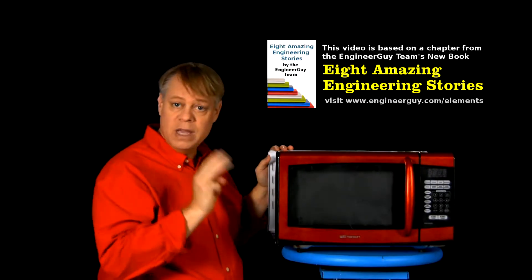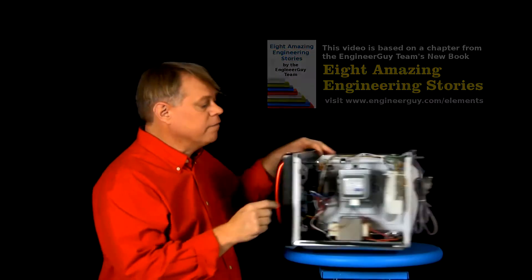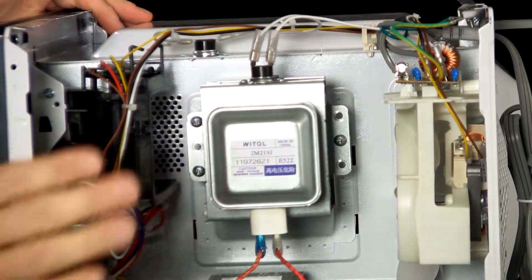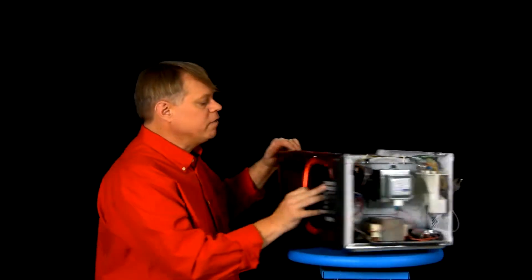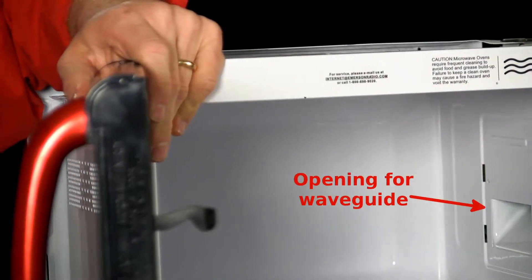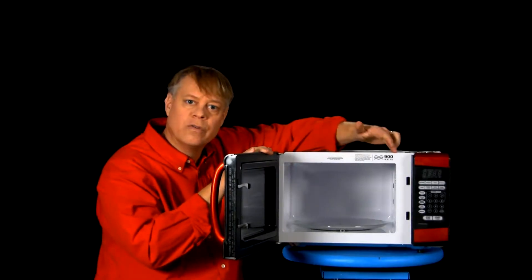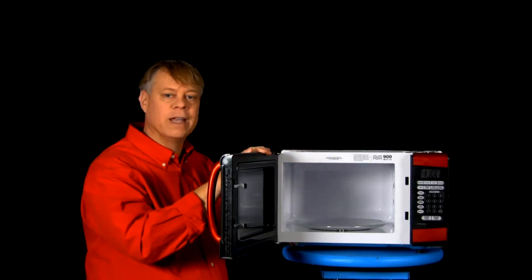A microwave contains three main components: a vacuum tube called a magnetron that generates the energy that heats food, a waveguide hidden in the wall to direct that energy to the food, and a chamber to hold the food and safely contain the microwave radiation.